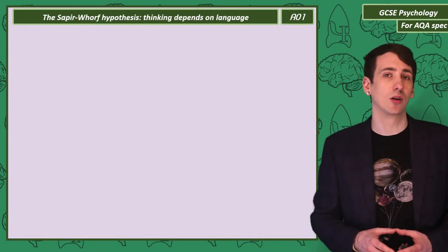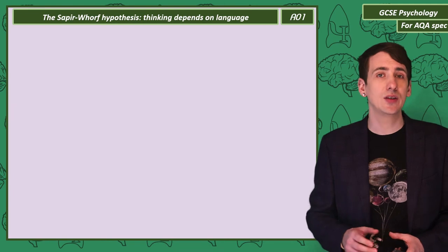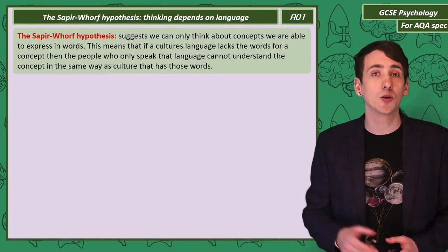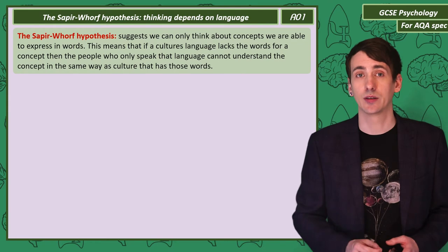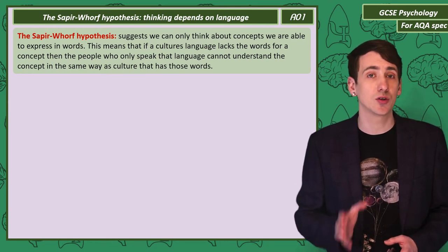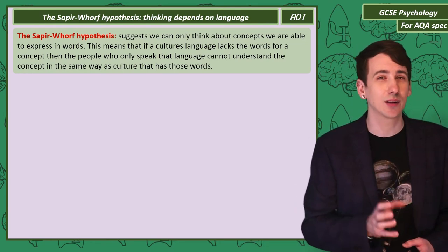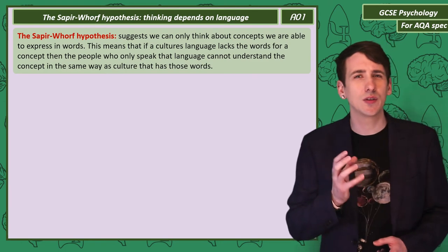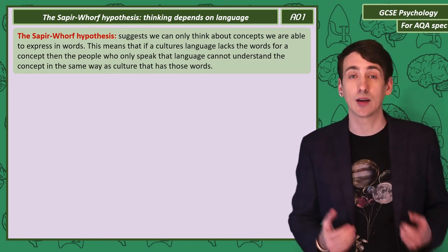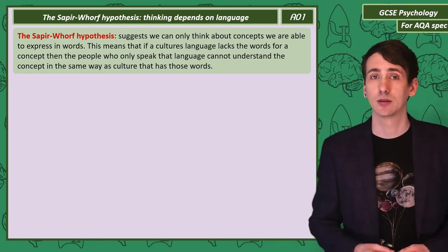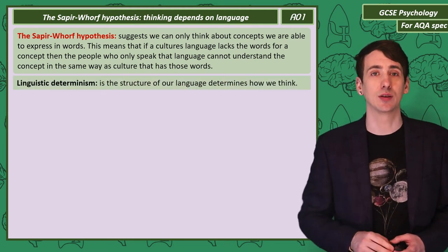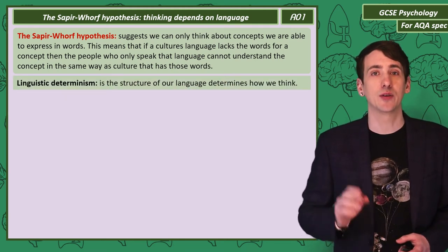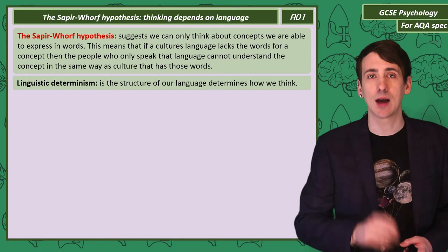So what is the Sapir-Whorf hypothesis? This suggests that in order to be able to think about a concept, we need to be able to express it in words. It follows that if a culture doesn't have a word for an idea or object, they can't understand the concept in the same way as a culture that does have the word. This idea is called linguistic determinism — that the structure of our language shapes how we think.